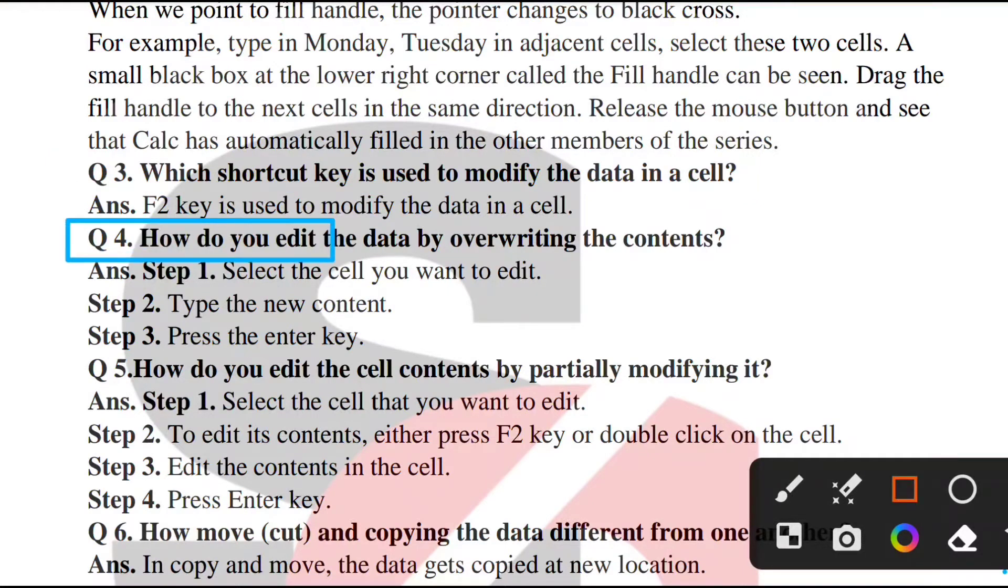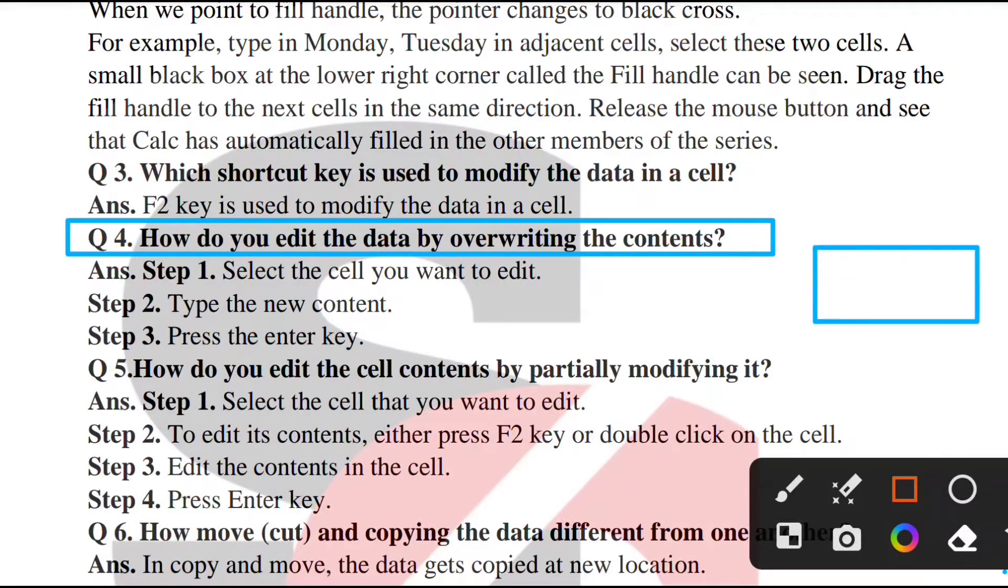Question 4: How do you edit data by overwriting the content? You have written a value in the cell, suppose plus. Now you want to overwrite it, not edit it. Simply select the cell you want to edit. Type the new content. As soon as you type new content, the previous one will disappear. Then press the Enter key. If you want to edit, press F2 key and the cursor will appear.